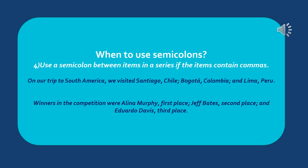Second example: 'Winners in the competition were Alina Murphy, first place; Jeff Bates, second place; and Eduardo Davis, third place.' Between a person's name and their place, we put a comma. Then between each name-place pair, we put a semicolon, so the reader can clearly distinguish each item in the list.